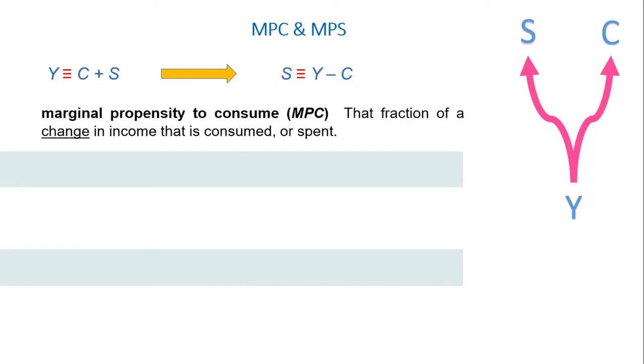Now, marginal propensity to consume MPC is that fraction of a change in income that is consumed or spent. It's the slope of the consumption function, delta C over delta Y. For instance, if my income increased by $100 and my consumption increased by $80, it means MPC equals 80 over 100, which is 0.8.